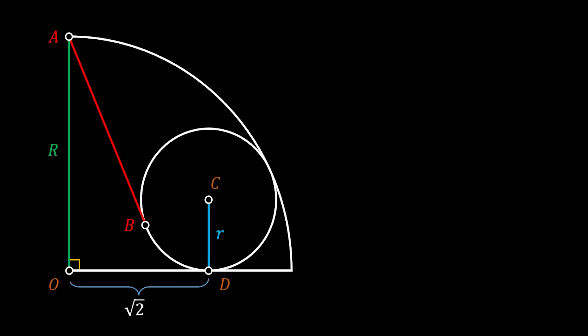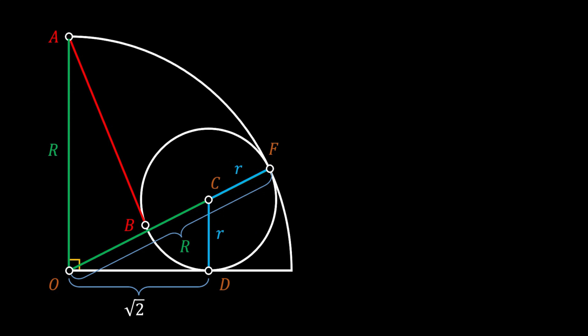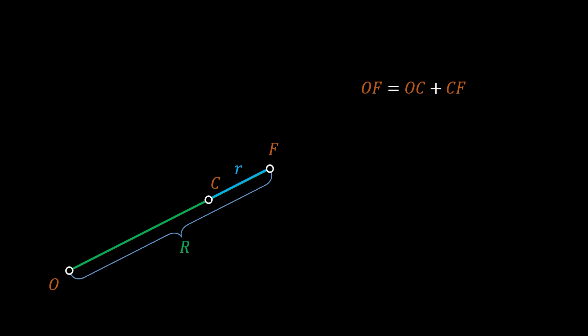CD represents the radius of the smaller inscribed circle and we will label this radius as small r. Now we will rotate the radius of our quarter circle to the center of our smaller circle C. This line will touch the intersection point between our smaller circle and the arc of our quarter circle, and we will label this point as F. If we rotate the radius of our smaller circle, the line CF will also have the value of small r. From here we can conclude that the length of line OF must be equal to line OC plus line CF.